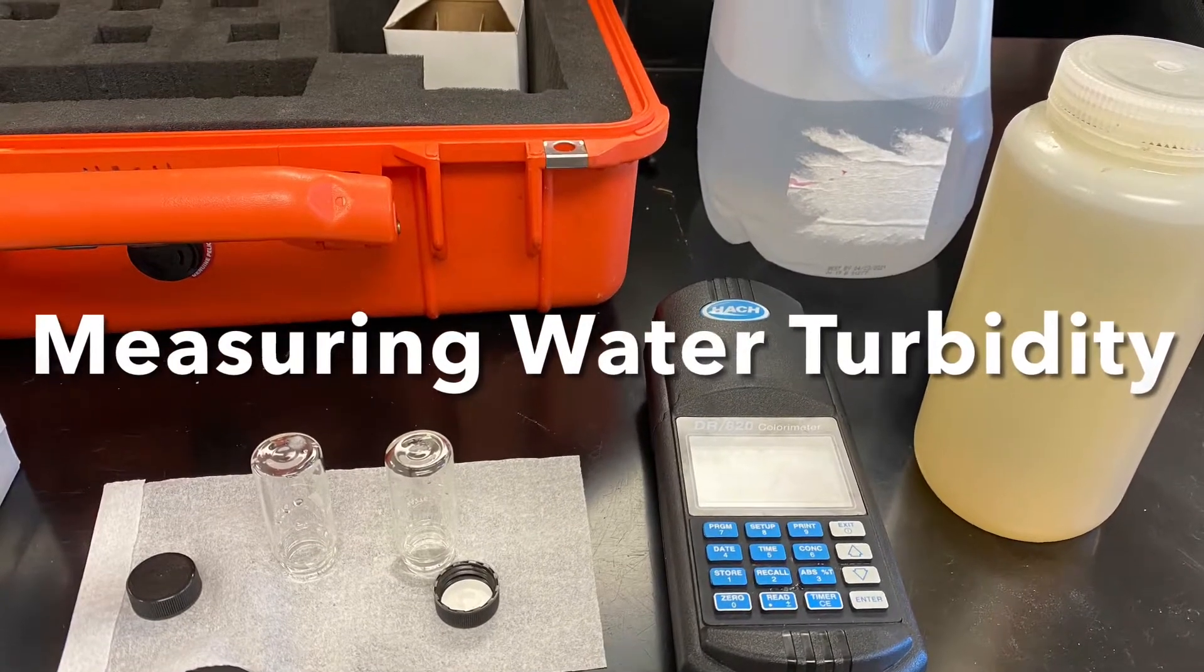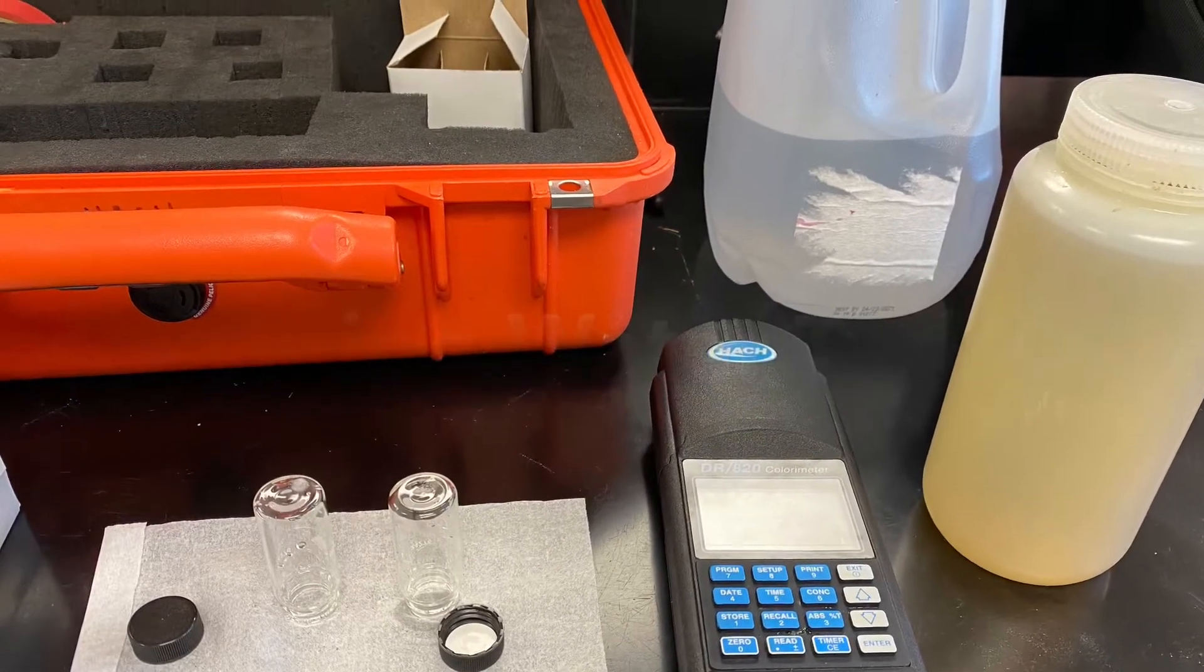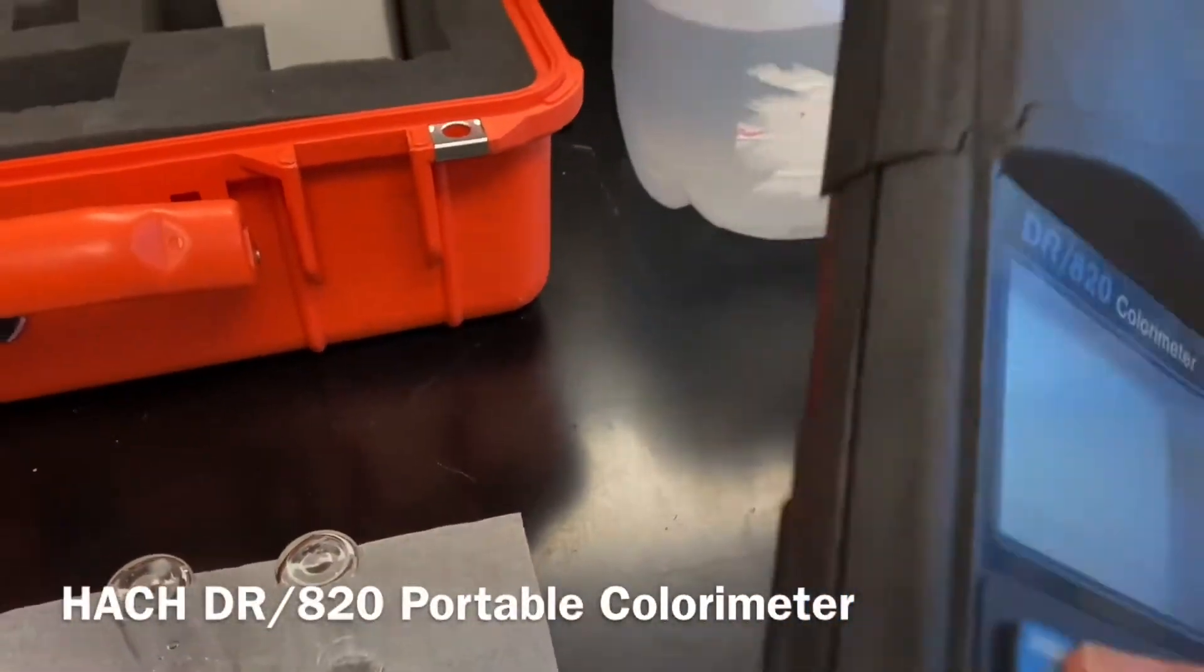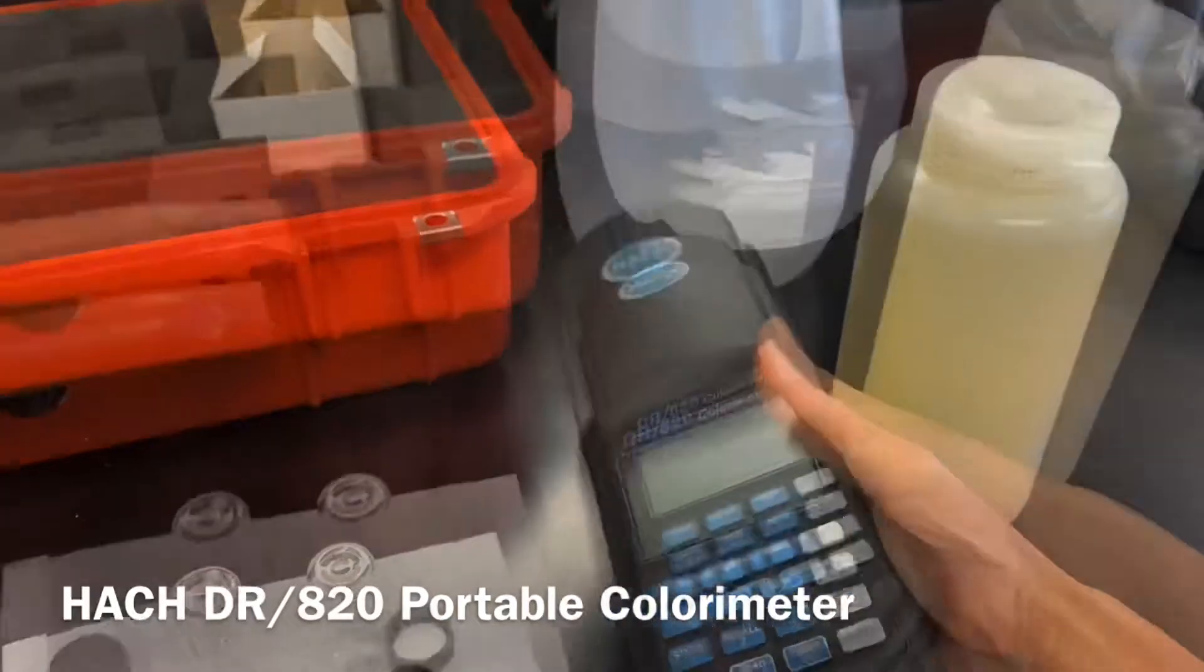Turbidity of water is a measure of cloudiness of the water that is caused mainly by suspended particles and also by some dissolved matter in the water.